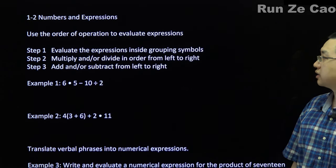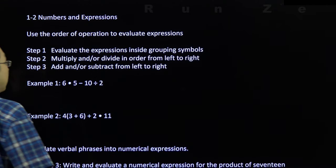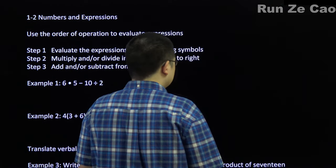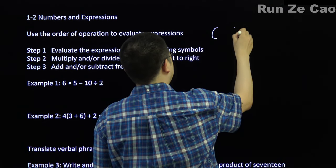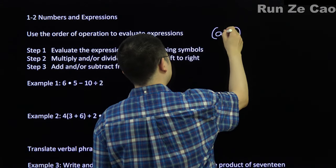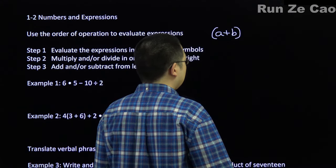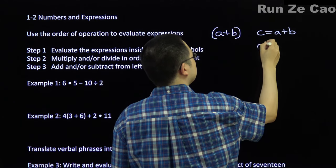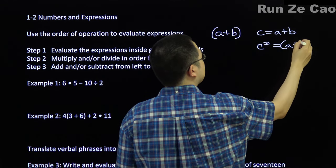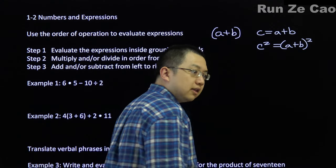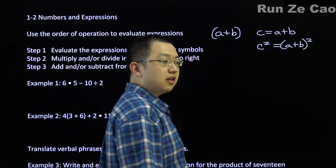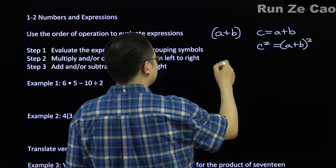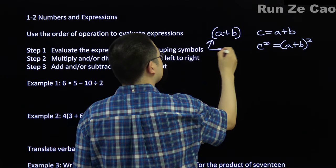Numbers and expressions. Let's use the order of operations to evaluate expressions. First, you evaluate the expressions inside grouping symbols — say brackets, like (a + b). Exponents also come with their own brackets, technically speaking. Grouping symbols include brackets, exponents, and fractions are also grouping symbols. Because (a + b) over (c + d) — that fraction represents a division, and the division is prioritized before other things.